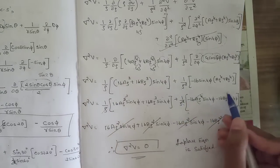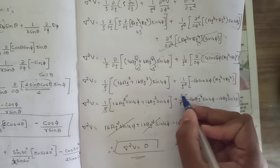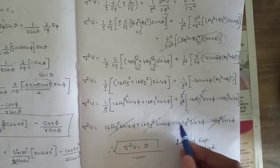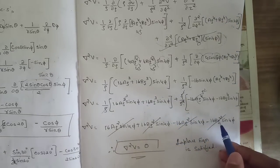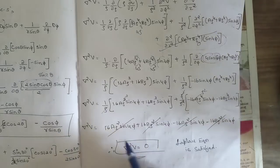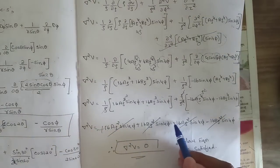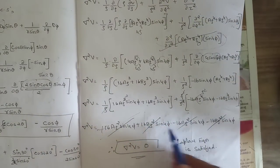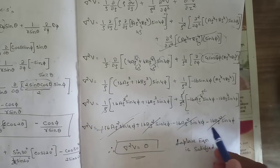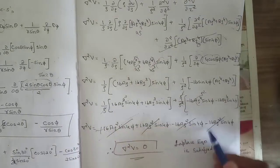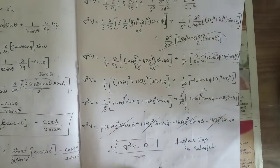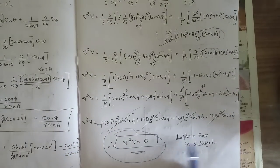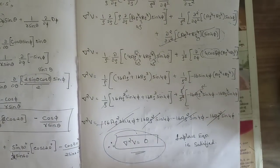The positive and negative terms cancel: +16aρ² sin4φ − 16aρ² sin4φ = 0, and +16bρ² sin4φ − 16bρ² sin4φ = 0. Therefore ∇²V = 0, and the Laplace equation is satisfied.